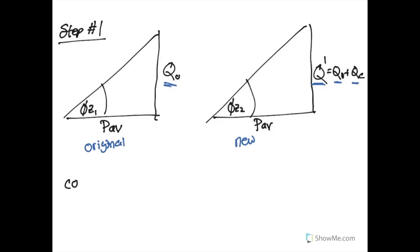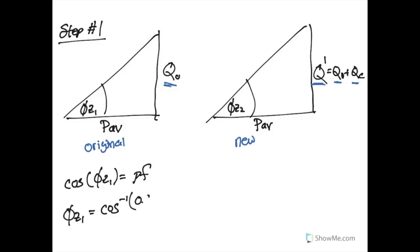Recall that the cosine of the phase angle equals the power factor. The power factor we started with was 0.8, so our current angle — cosine inverse of 0.8 — is 36.87 degrees. In our new system, we want to find the new phase angle.